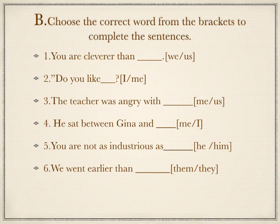We have one more exercise on page number 22, which will be your homework. Question B says: choose the correct word from the brackets to complete the sentences. You have six sentences with two options each — read carefully and place the correct pronoun using the given brackets. We'll discuss the answers in our next video. Till then, keep speaking and learning English at home.